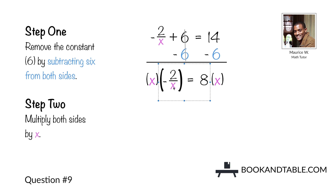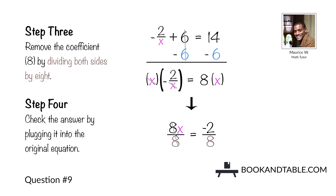So 8x is equal to negative 2. Now our x is in the numerator instead of the denominator, so step three: remove the coefficient by dividing both sides by 8. That leaves us with x is equal to negative 2 divided by 8, which is x is equal to negative 1/4.